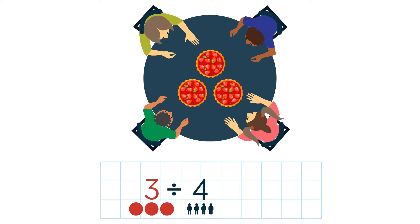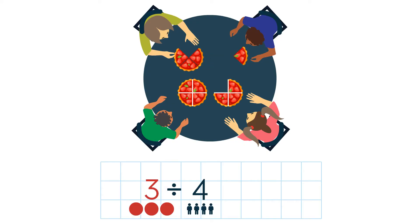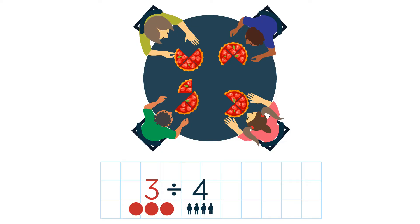So each pie gets divided into four slices. Each student gets three fourths of a pie. So three divided by four is three fourths.